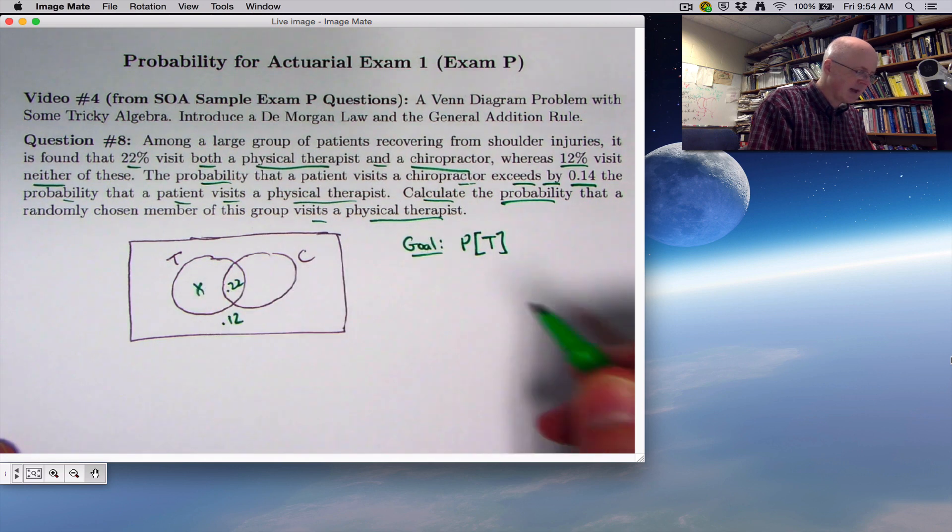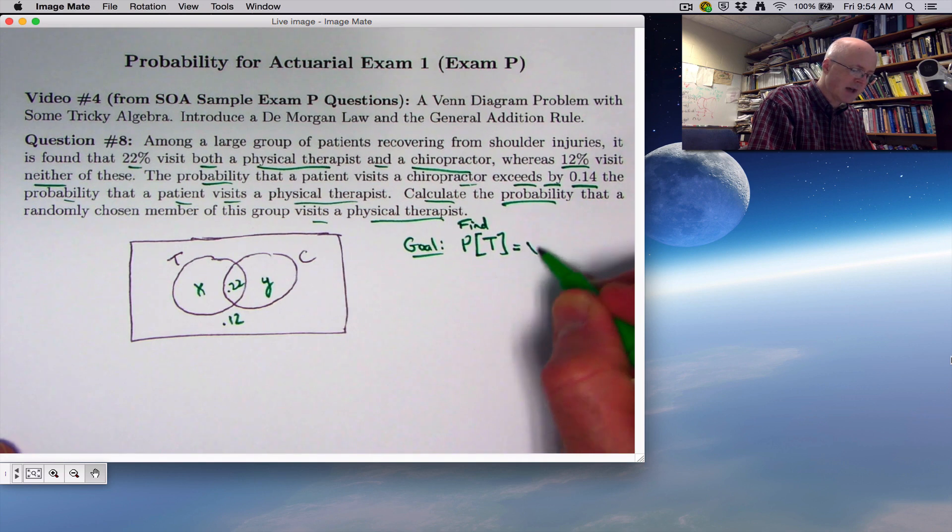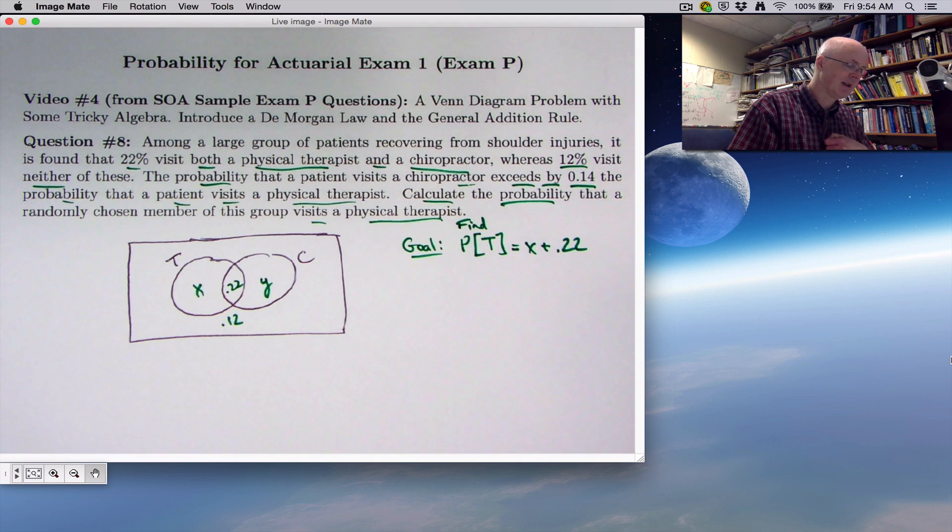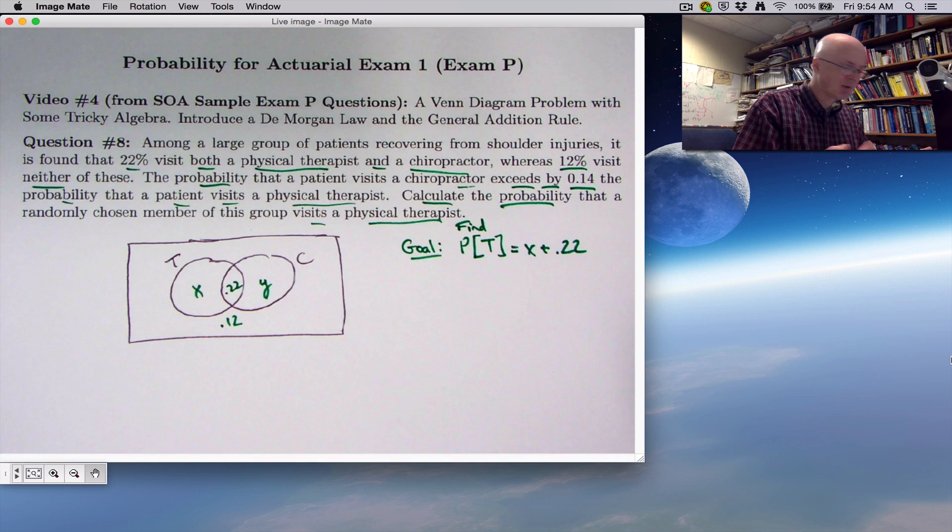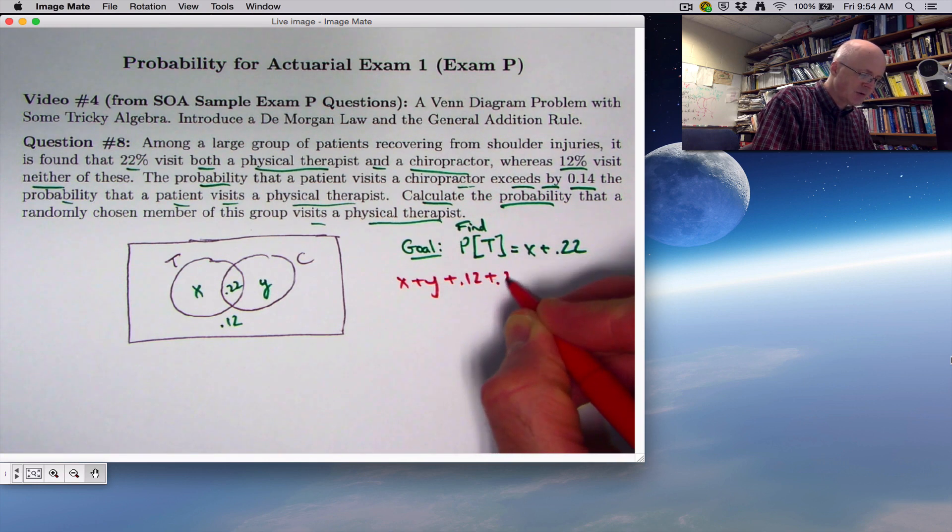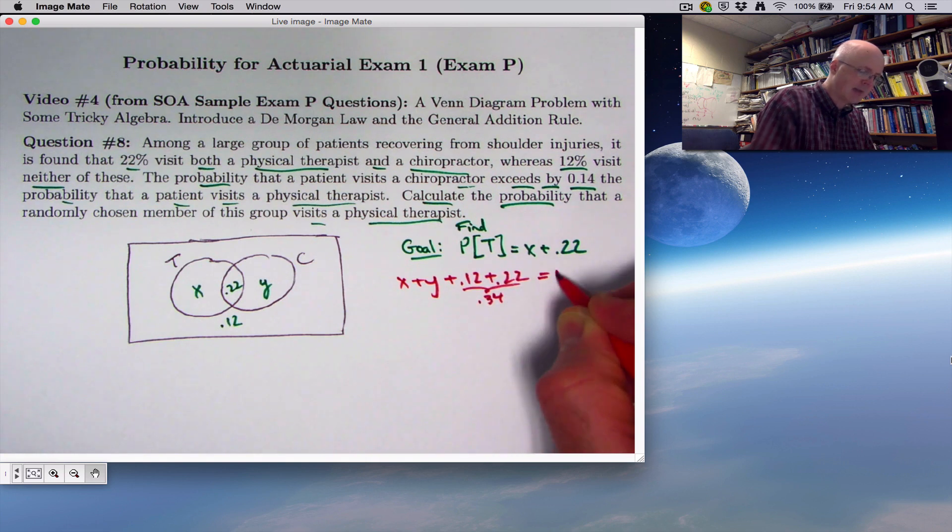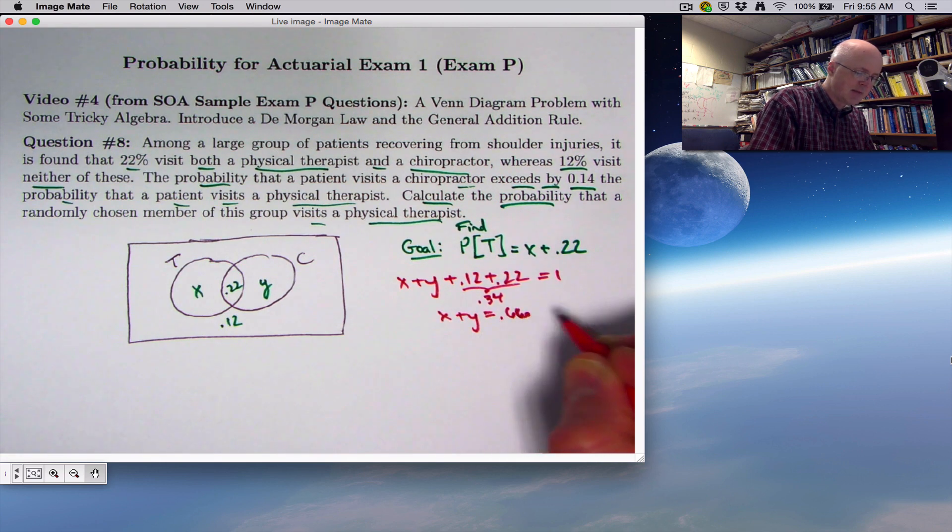We want to figure out the probability that a randomly chosen person visits a physical therapist. If I label this crescent with X and this crescent with Y, we want to find the probability that they visit a physical therapist. In this symbolism that is going to be the value of X plus 0.22. So if we can find X, we can find the answer to the problem. We need to use the givens plus the fact that all these probabilities labeling these four different regions have to add up to one.